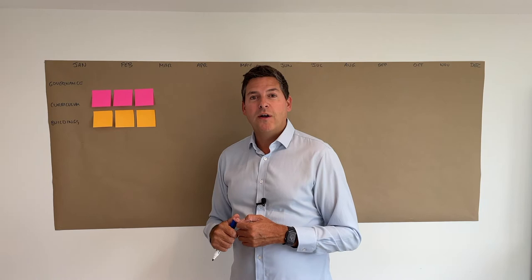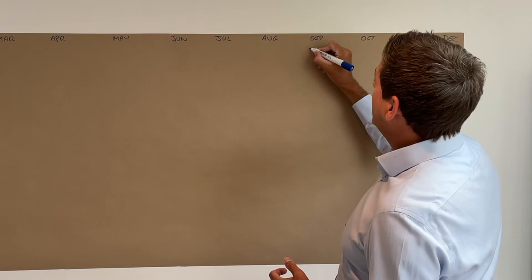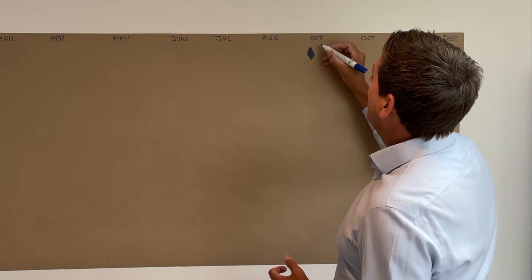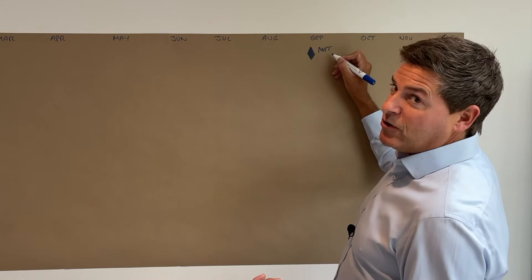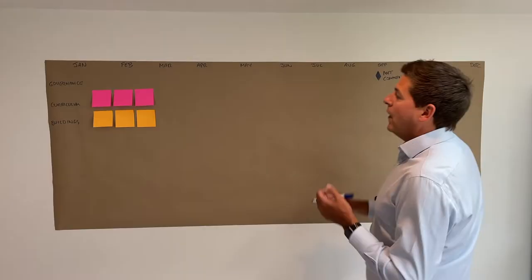There may be a known end point you can put up straight away as a focus. Let's say we want our school in the new multi-academy trust and working from September — that's the academic year in the UK. So we put up September with a milestone. Diamonds represent milestones in project management. You might write on it: 'multi-academy trust commences.' Really rather straightforward from here.